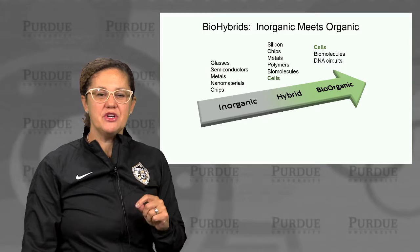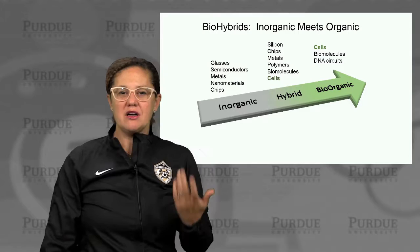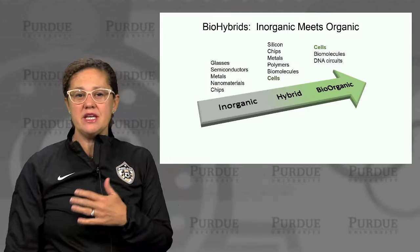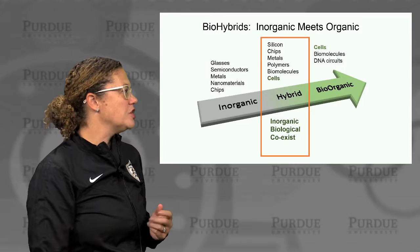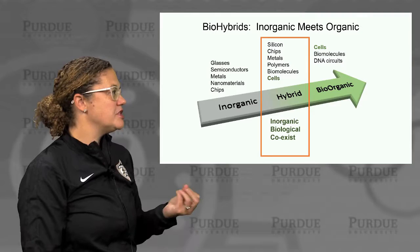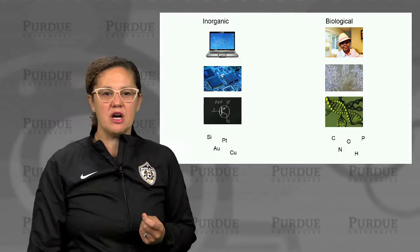Bio-hybrids live where inorganic meets the organic. The organic world is where our cells live, biomolecules, DNA circuits, all this organic chemistry. At the inorganic end is where our silicon-based chips, computer chips, metals, and glasses exist. And the hybrid world is where these two things come together, where the inorganic and biological coexist, particularly with living cells involved.